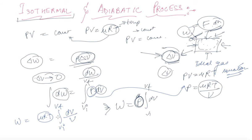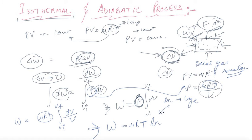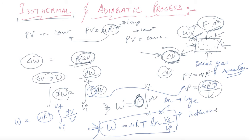Since μRT is a constant, it goes outside the integral. What remains is ∫dV/V. Solving this, the work done is W = μRT · ln(V_final/V_initial), where ln is log to the base e. This is the work done in an isothermal system. Now let's look at some other processes.